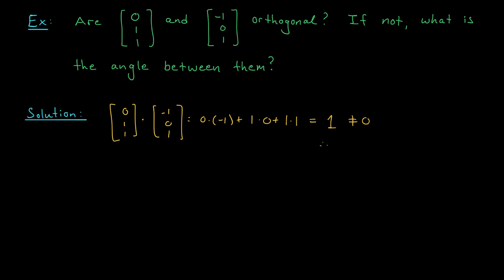So my vectors are not perpendicular. But we can still determine the angle between them using the formula from the last slide. Remember, the dot product of two vectors is the norm of the first vector times the norm of the second vector times the cosine of the angle between them.